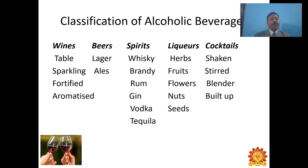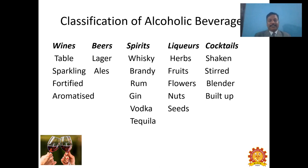Beers have two main classifications: Lager and Ales, and other classifications we will see in subsequent classes. Spirits include whiskey, brandy, rum, gin, vodka, and tequila — all classified as spirits. Liquors: when you add herbs, fruits, flowers, nuts or seeds to spirits, it is termed as liquors, also called digestive or cordial in some countries.